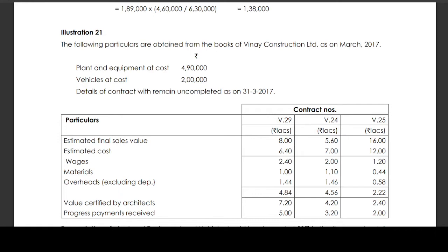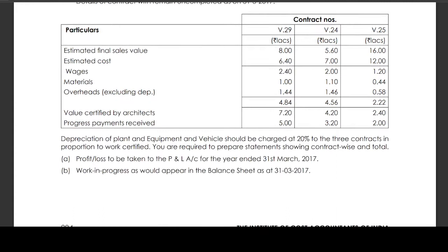For contract V25: Estimated final sales value is Rs 6,00,000. Estimated cost comprises wages Rs 1,12,000, materials Rs 44,000, overheads excluding depreciation Rs 58,000, totalling Rs 2,22,000. Value certified by the architect is Rs 2,40,000. Progress payments received is Rs 2,00,000.